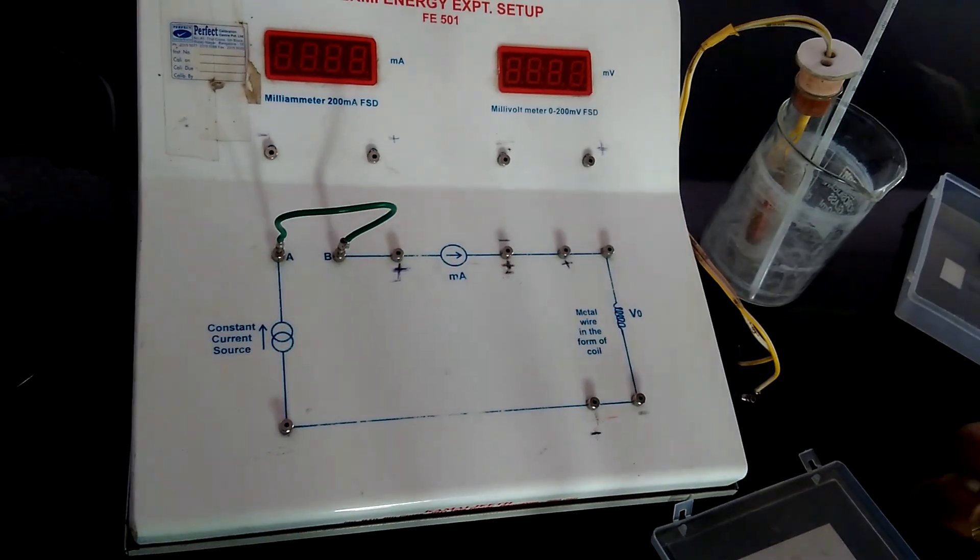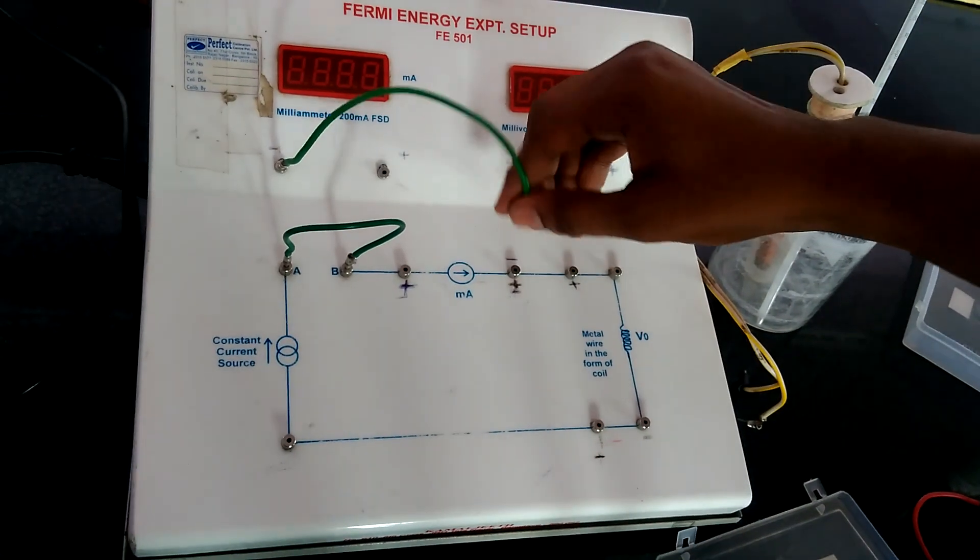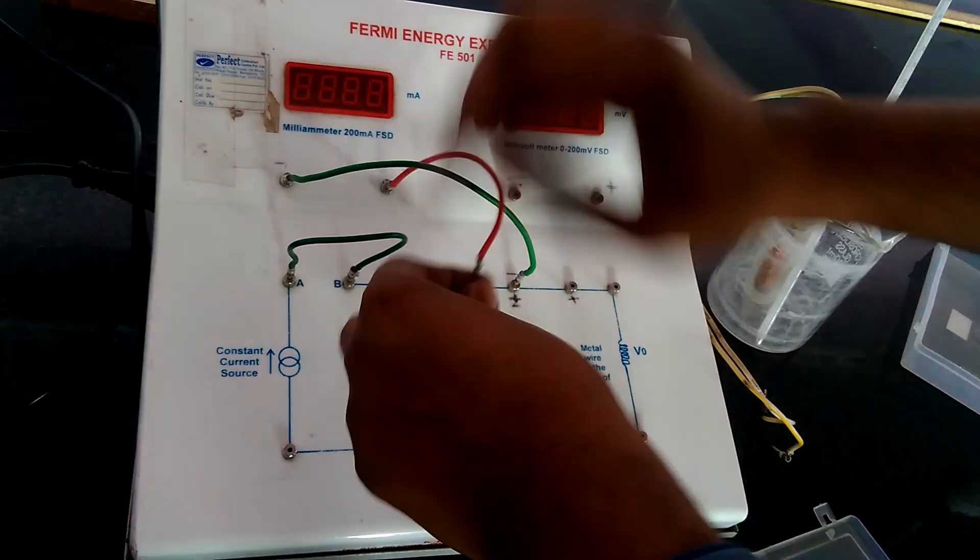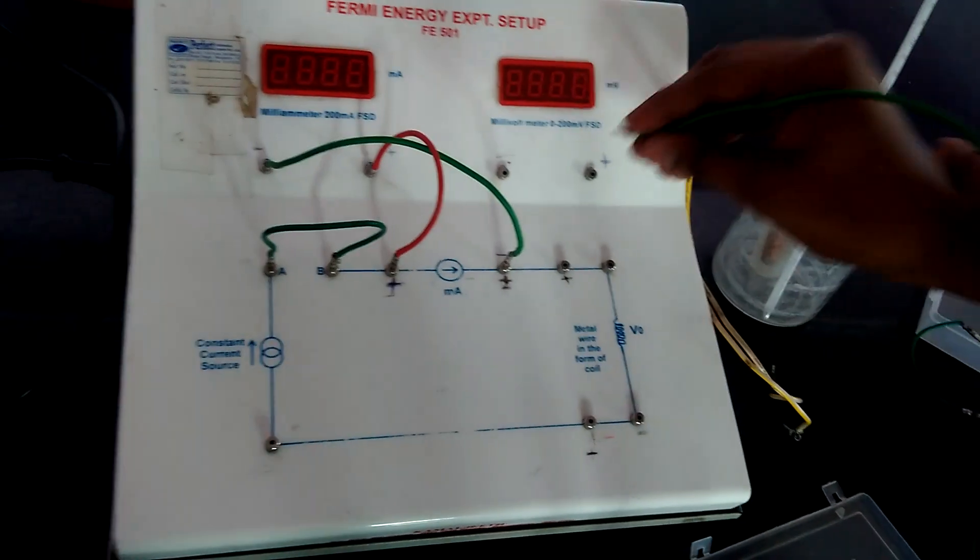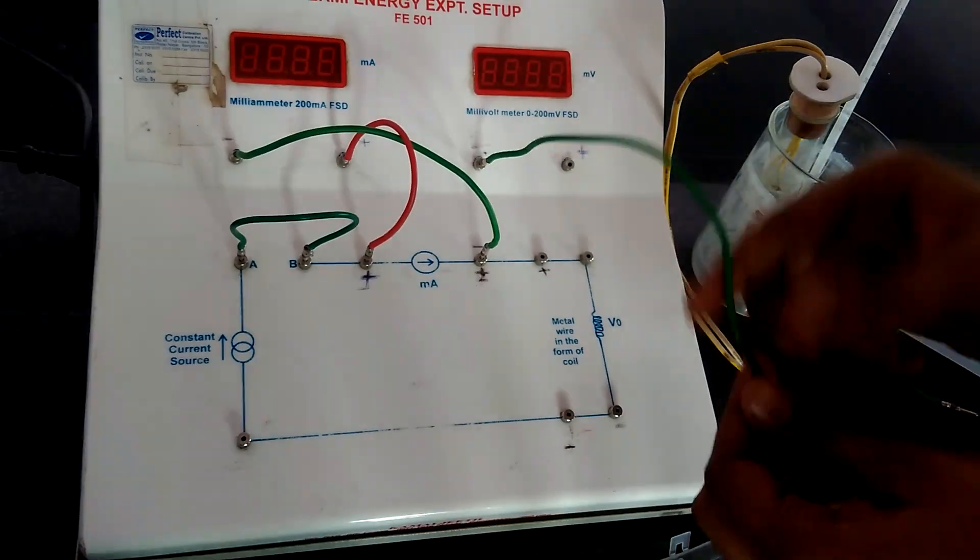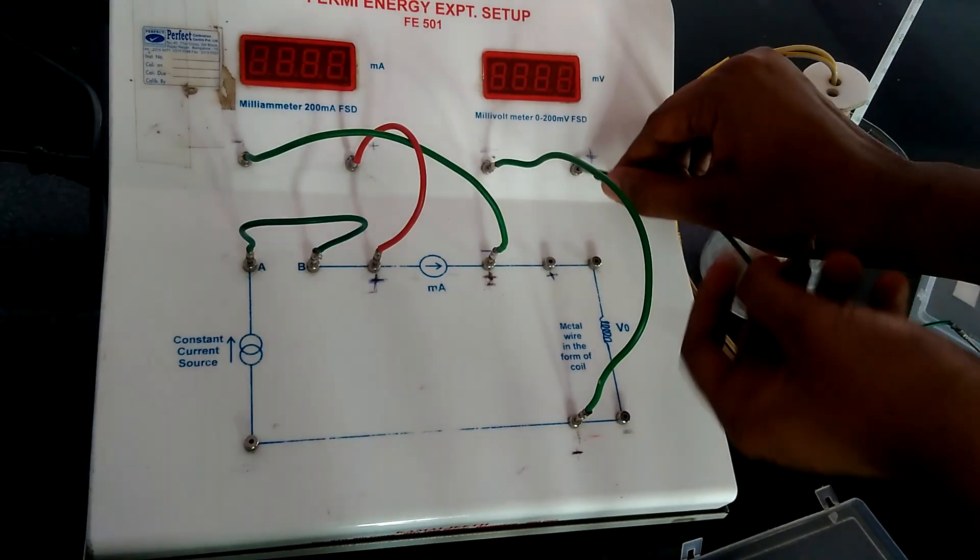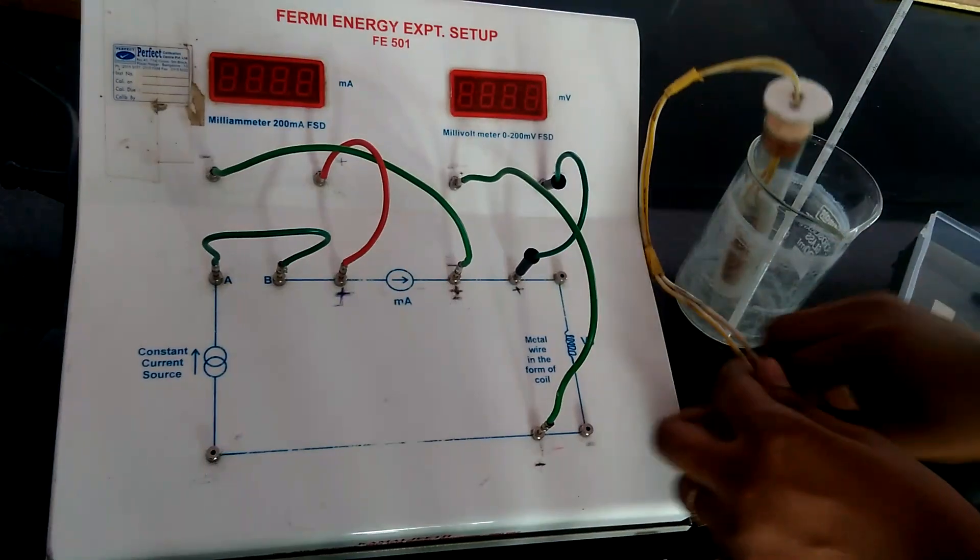Now take an extra wire and join negative of the milliammeter to negative, and positive to positive. Then join the copper wire coil.